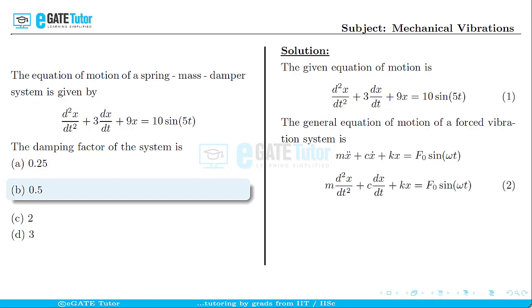This can be further written as m·d²x/dt² + c·dx/dt + kx = F₀sin(ωt). Let us consider this one as equation 2.